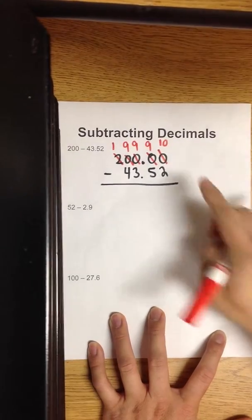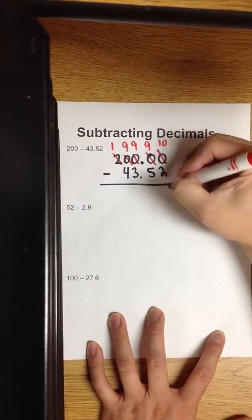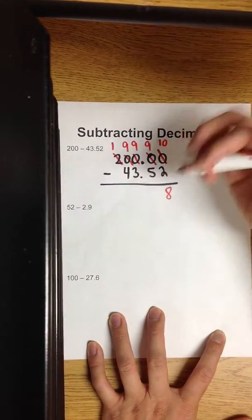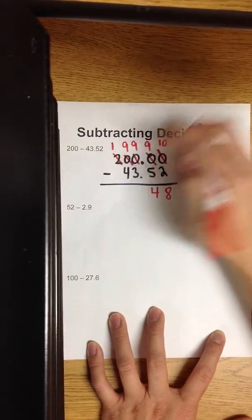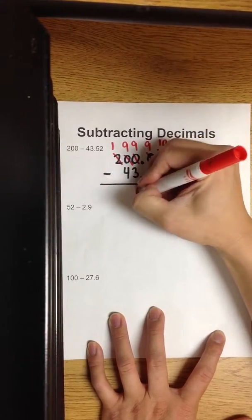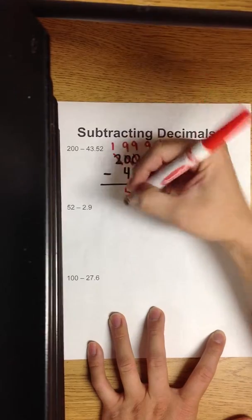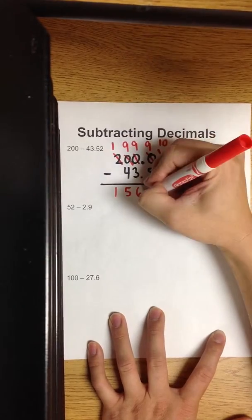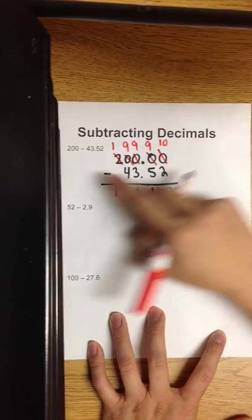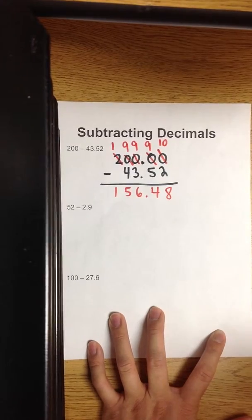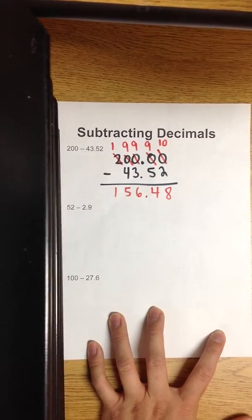So what is ten minus two? Eight. Nine minus five? Four. Nine minus three? Six. Nine minus four? Five. And one — nine minus four. So the difference between 200 whole number and 43 and 52 hundredths is 156 and 48 hundredths.